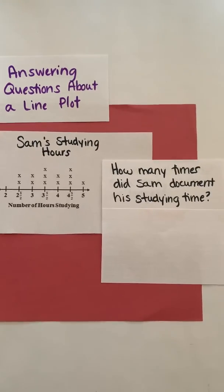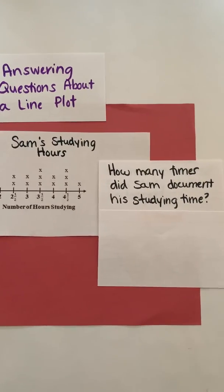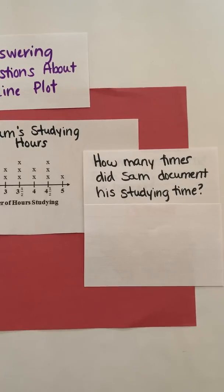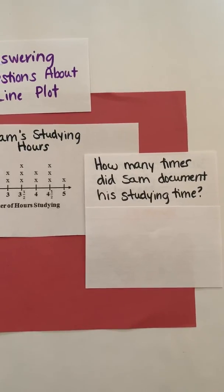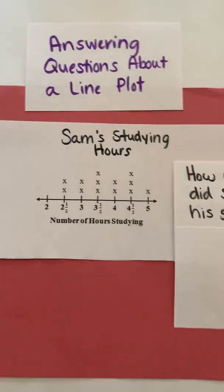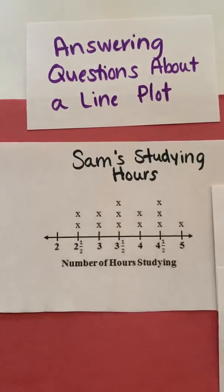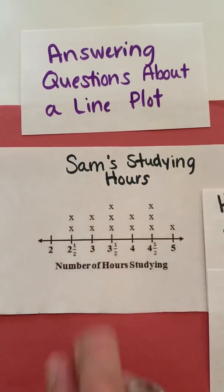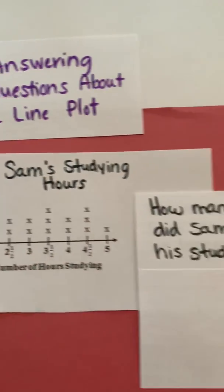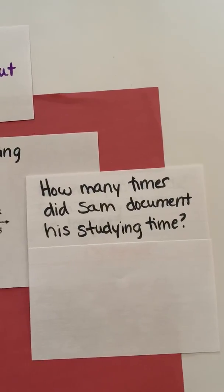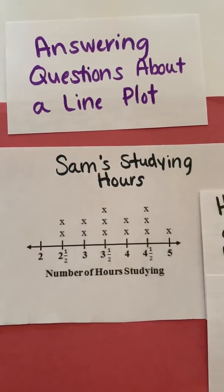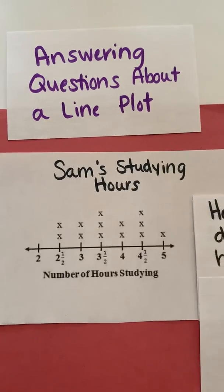If you're still struggling, definitely get somebody to help you. The first question we're going to look at is: how many times did Sam document his studying time? Remember, each of these X's represents a time that he studied. To figure out how many times he studied, we're going to count those X's.